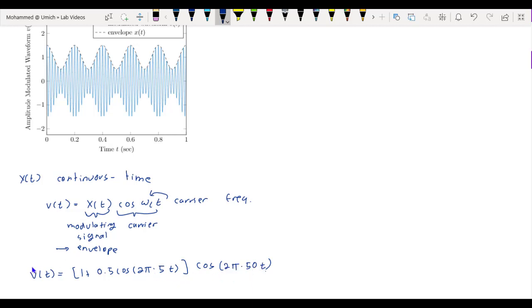And a plot of this AM modulated signal v(t) is shown here, in which, as you can see, these blue oscillations are the high frequency variations of the carrier, and then this is our envelope x(t).